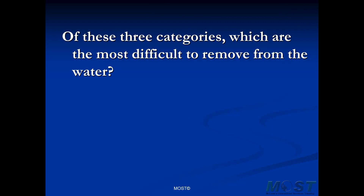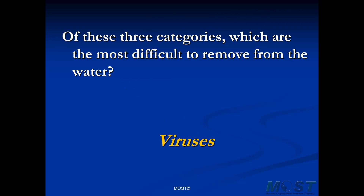Of these three categories, which are the most difficult to remove from the water? The hardest ones to remove are the smallest ones, and those are the viruses. The larger something is, the easier it is to physically remove. The protozoans are about a thousand times larger than the viruses, and the bacteria are approximately a hundred times larger — so they're easier to remove than the viruses, though not easy.